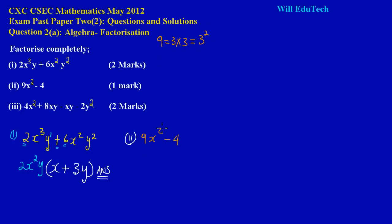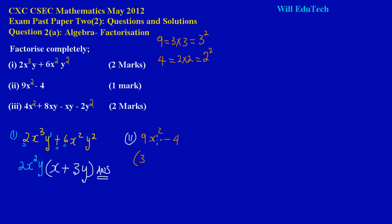Obviously x is already squared. Now let's look at the 4: 4 is the same as 2 times 2, which is the same as 2 squared. If you're not sure about your indices, feel free to check out our playlists on indices and exponents. So we have a square term being subtracted from another square term. The trick is: you're going to find the square root of 9, which is 3, then the square root of x² which is x.